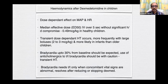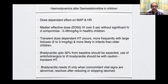Regarding hemodynamics after dexmedetomidine in children: it has a dose-dependent effect on mean arterial pressure and heart rate. Median effective dose intravenously over 5 seconds without significant hemodynamic compromise was found to be 0.49 micrograms per kg in healthy children. Transient dose-dependent hypertension can occur, more frequently with large boluses and more likely in infants than in older children. Bradycardia up to 30% from baseline should be expected. Use of anticholinergics to treat bradycardia should be with caution, as transient hypertension can occur after anticholinergic use. Bradycardia needs treatment only when concomitant vital signs are abnormal — it usually resolves by reducing or stopping dexmed.